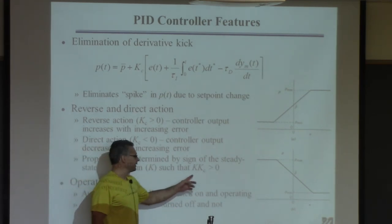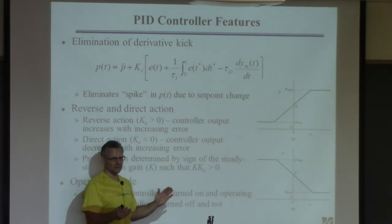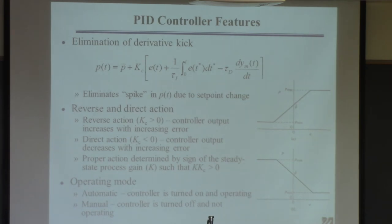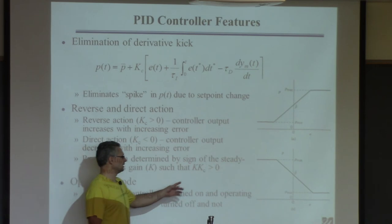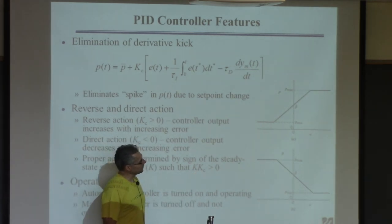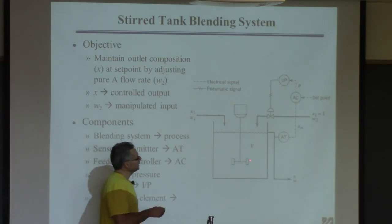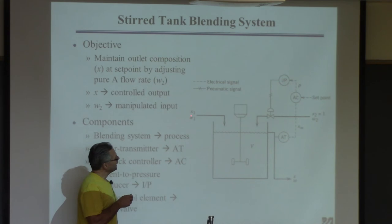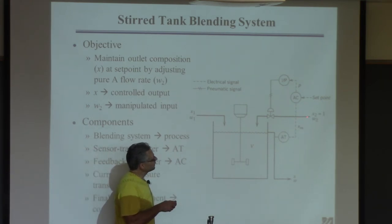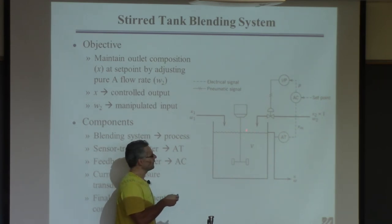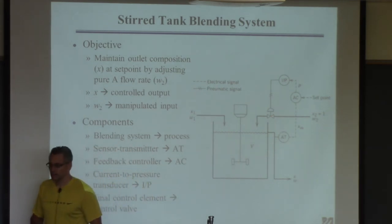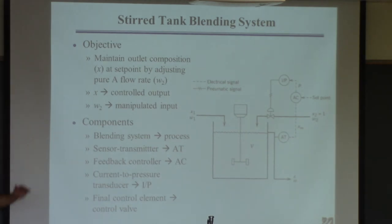If you use the wrong sign for the controller gain, the controller does the opposite of what it should. For example, if the outlet stream doesn't have enough component A and the controller has the wrong sign, it will reduce the flow of pure A further — making things worse — until the valve is fully closed. Any time in the lab your controller slowly moves to one extreme and stays there, there's a good chance the controller gain has the wrong sign.